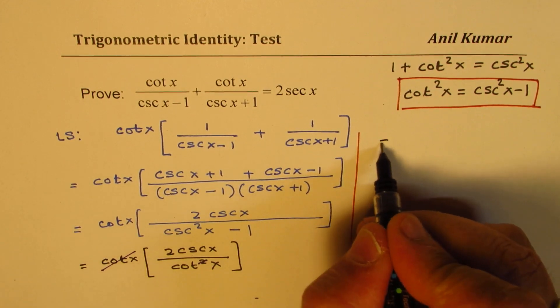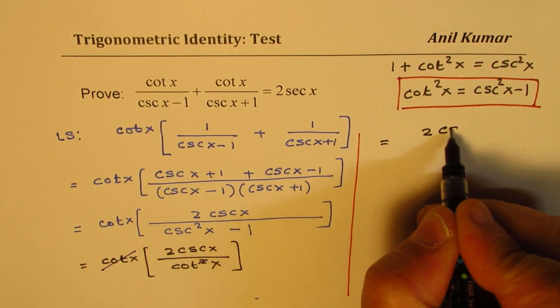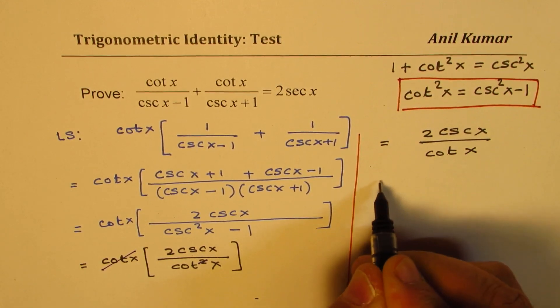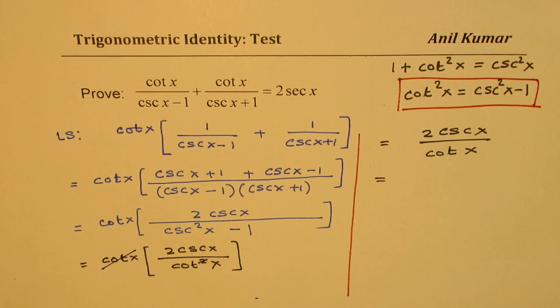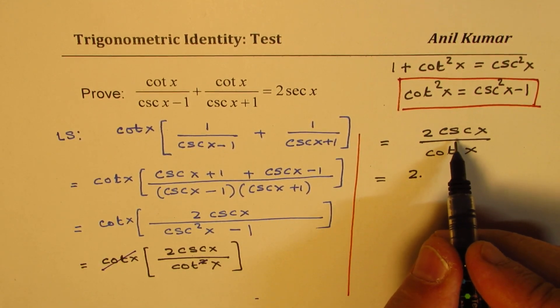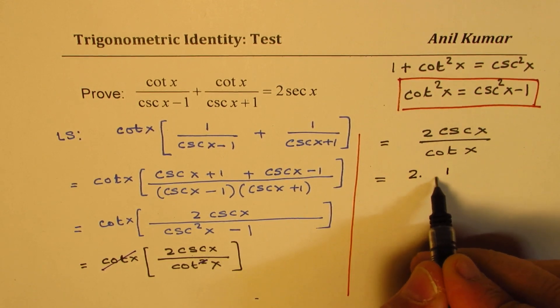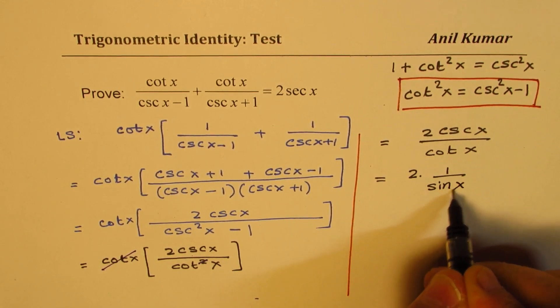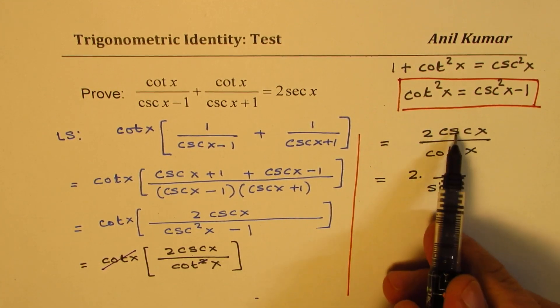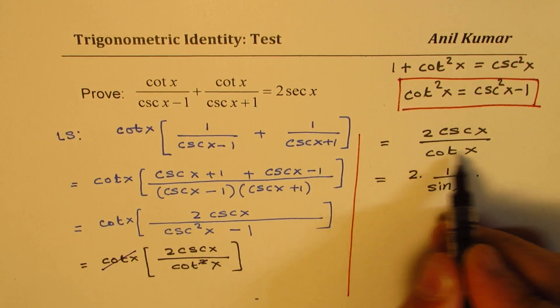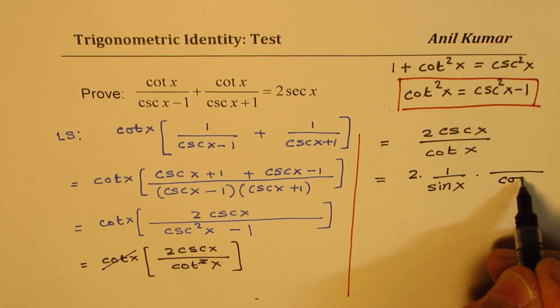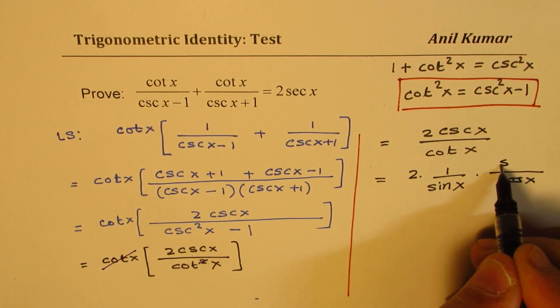Let us take it on the right side. So what you get here is 2 cosecant x over cotangent x. Now we can write them in terms of sine and cosine. Cosecant is reciprocal of sine. So cosecant x can be written as 1 over sine x. So it's good to write them separately. It's very clear. 2, the number 2, cosecant x is 1 over sine x. Cotangent x is cos x over sine x. It is in the denominator. So we'll write this as cos x over sine x.